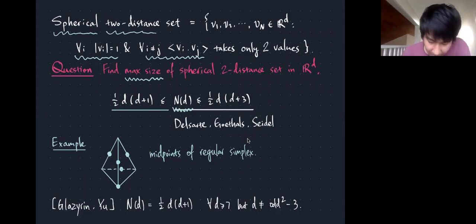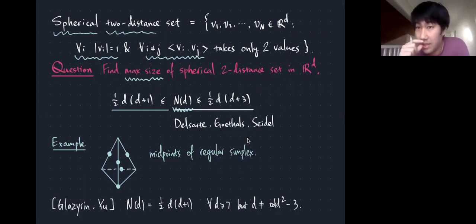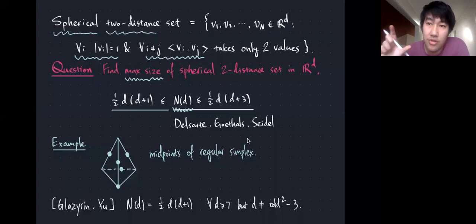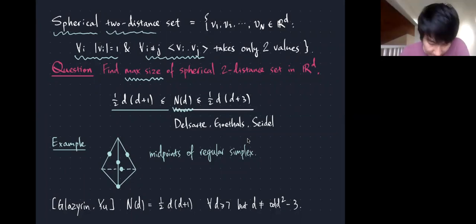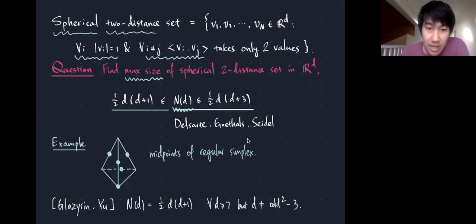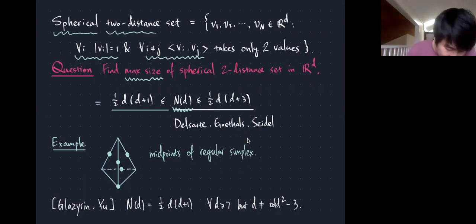The lower bound construction: take a properly scaled regular simplex centered at the origin and take all midpoints of edges in the simplex. In D-dimensional space the simplex has D+1 vertices, so choosing any pair gives C(D+1, 2) midpoints. For example, a regular tetrahedron gives midpoints yielding the lower bound D+1 choose 2.